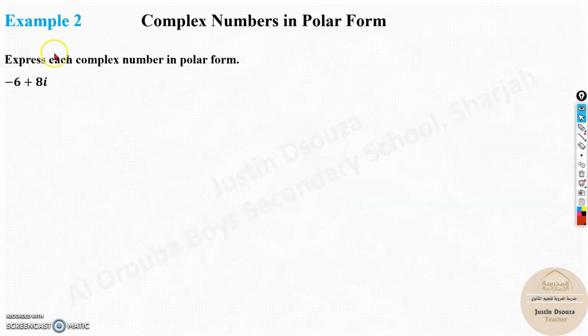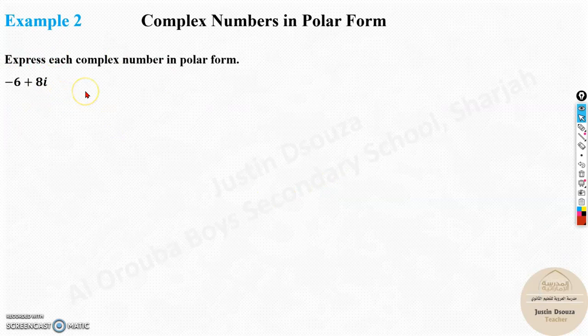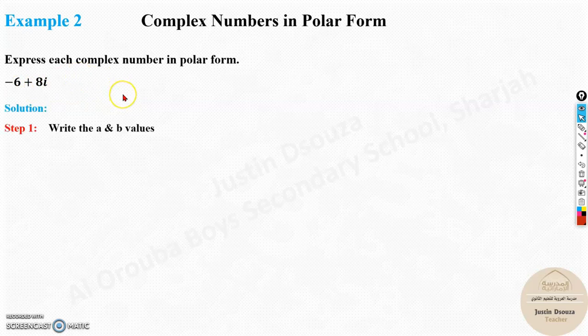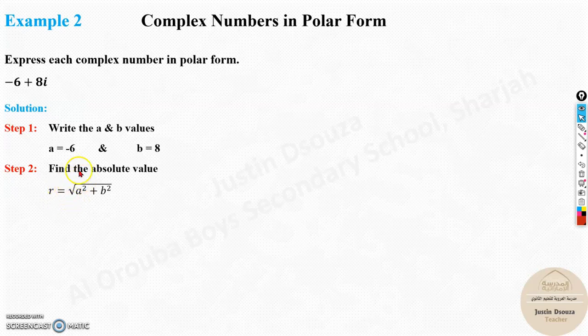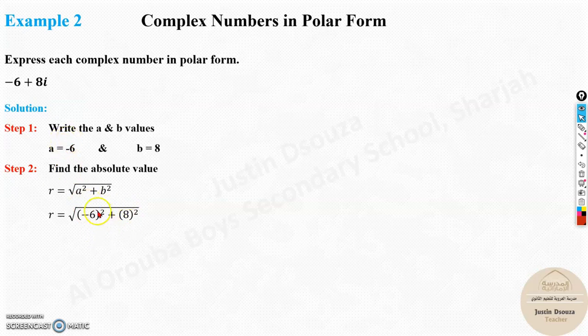Here, we have a complex number. We need to express it in polar form. Minus 6 plus 8i. So the first thing is, write the a and b values. a is minus 6, b is 8. Next, find the absolute value, that is, radius r value. So r equals square root of a squared plus b squared. Let's substitute the values. Use brackets when it's negative numbers. Put it in the calculator, you will get the answer. Square root 100, that is 10. r is found out.